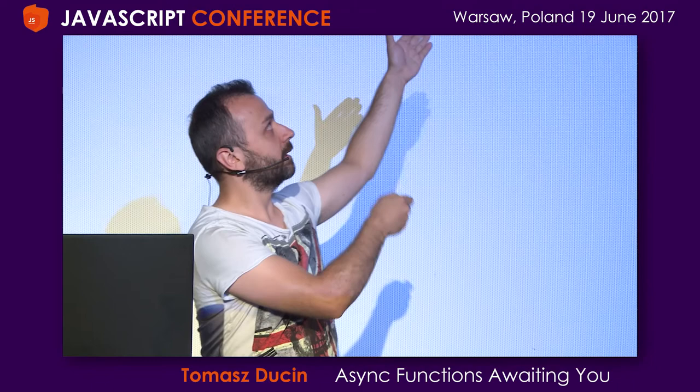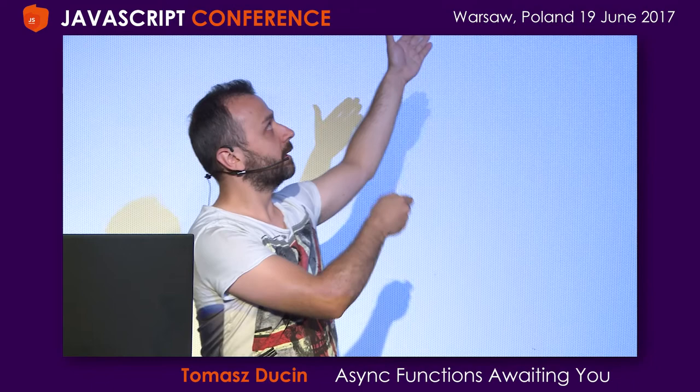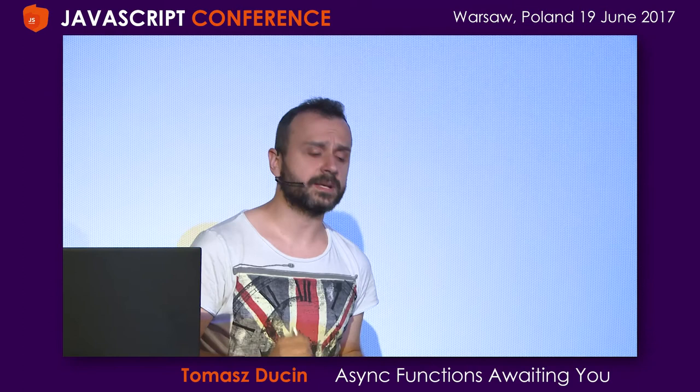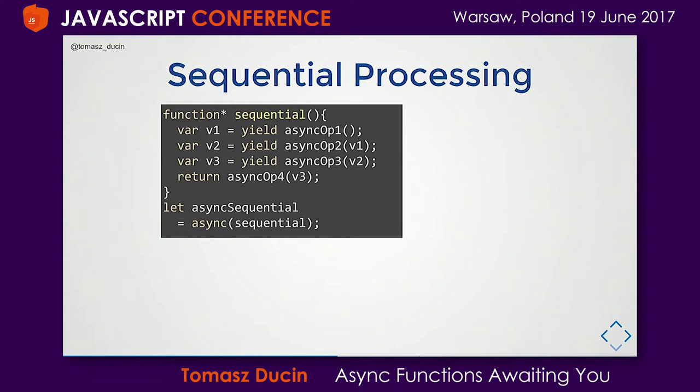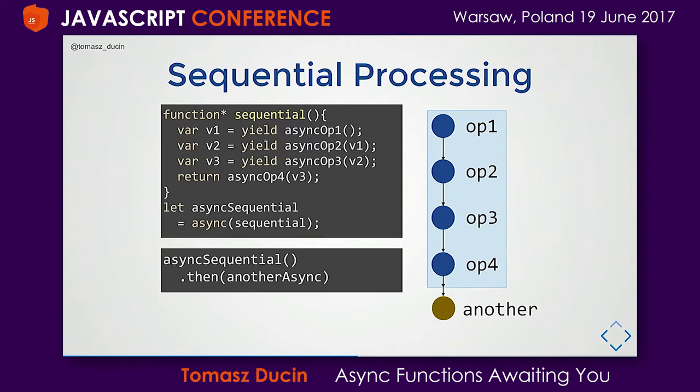In order to make this promise-generator environment work, we need to wrap the sequential function within an async wrapper. This is a closure that wraps the generator within an async promise-generator environment, giving us sequential processing exactly the same as before. We can encapsulate it within a function callable from outside — it's essentially a replacement for promise chains.